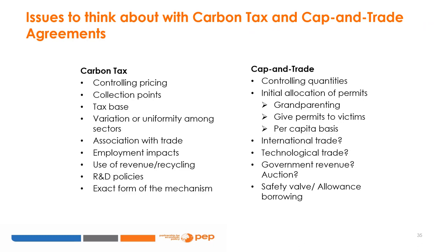The two main macro policies used globally in practice and in literature to mitigate GHG emissions are the carbon tax and the cap and trade agreements. Key issues to think about with regards to carbon tax include: the collection point, the tax base, variation or uniformity among sectors, the association with trade, employment impacts, the use of revenue and recycling, R&D policies, and the exact form of the mechanism. For cap and trade: the initial allocation of permits, grandparenting, per capita basis, international trade considerations, technological trade, government revenue through auction, and the safety valve or allowance borrowing.